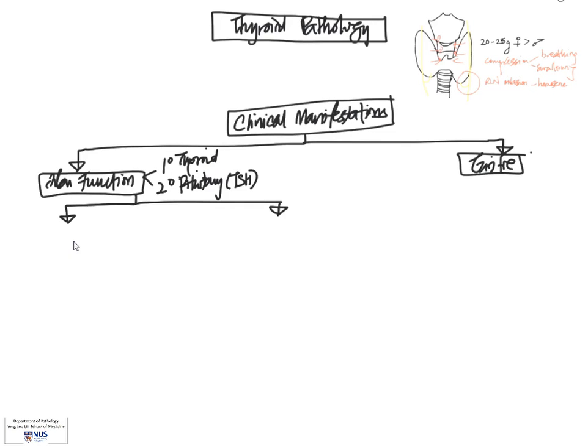Now, in terms of abnormal function, it's very simple. It can either be increased function, which we term hyperthyroidism, or the opposite, which is decreased function, which is hypothyroidism.